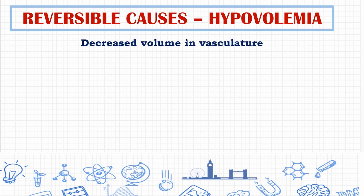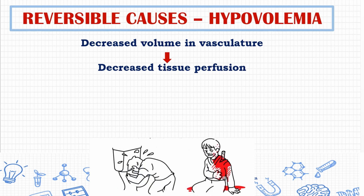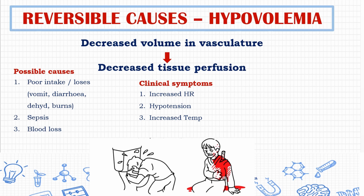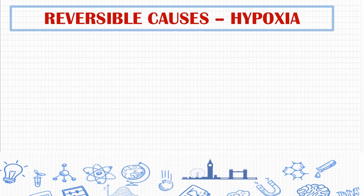Let's look at the first H: hypovolemia. Hypovolemia is a state of low extracellular fluid — that is, loss of fluid volume in the blood — which leads to decreased tissue perfusion. Possible causes include poor intake, losses through vomiting and diarrhea, dehydration, sepsis, and blood loss due to GI bleeding and injuries. These can cause clinical symptoms such as tachycardia, hypotension, and hypothermia.